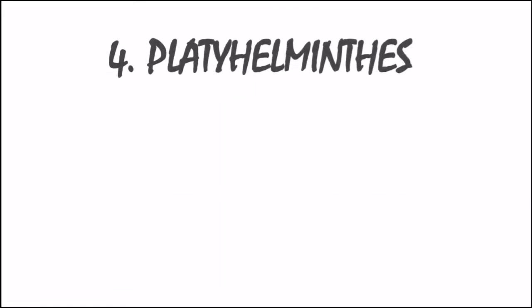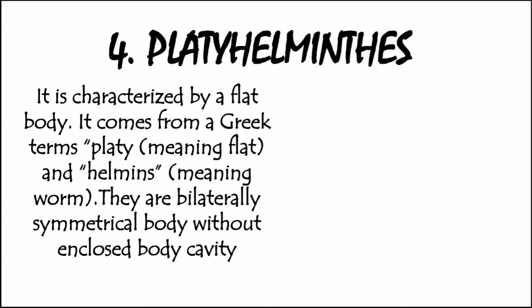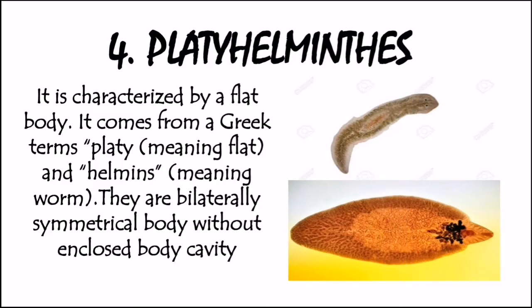Moving on to Platyhelminthes, it is characterized by a flat body. It comes from the Greek terms platy, meaning flat, and helminthes, meaning worms — so flat worms. They are bilaterally symmetrical in body without an enclosed body cavity. Examples of these are planarians as well as parasitic flukes or tapeworms. In anatomical terminology, a body cavity is any space or compartment or potential space in the animal body. It accommodates organs and other structures, and also serves as potential space to contain fluid.